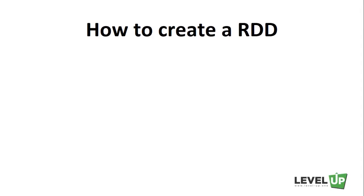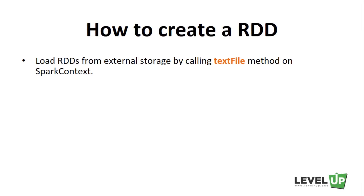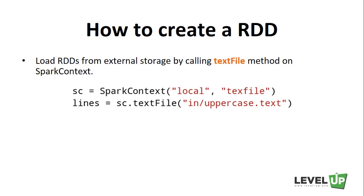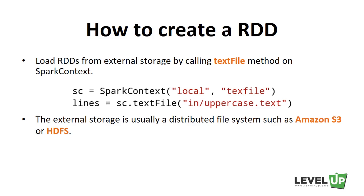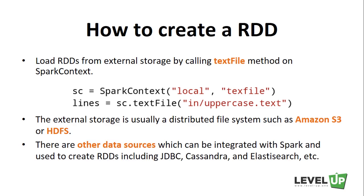A common way to create RDDs in Spark is to load the dataset from external storage. The external storage can be a local file system — in our word count example, we already saw how to load a text file as a string RDD using SparkContext's textFile method. More realistically, the external storage is a distributed file system such as Amazon S3 or HDFS. There are many other data sources that can be integrated with Spark, including JDBC, Cassandra, and Elasticsearch. We won't cover all of them in this course, but references are available in the next lecture.